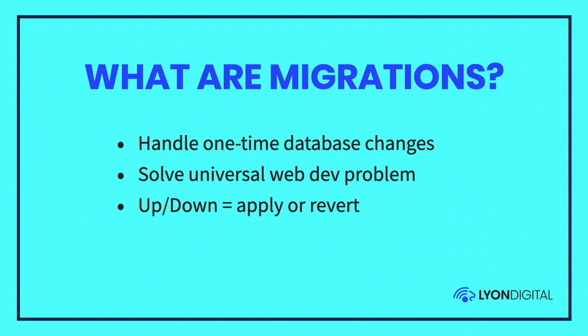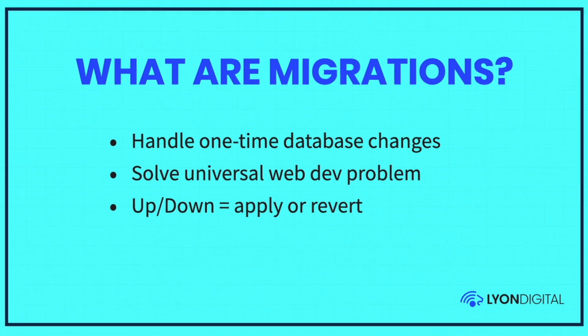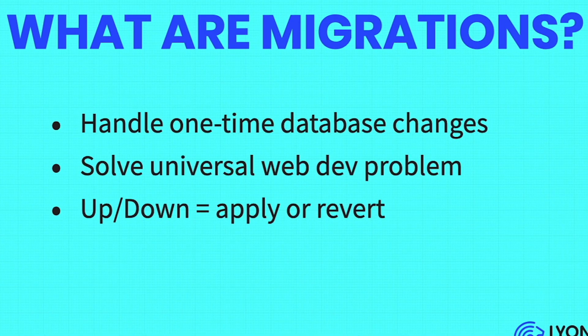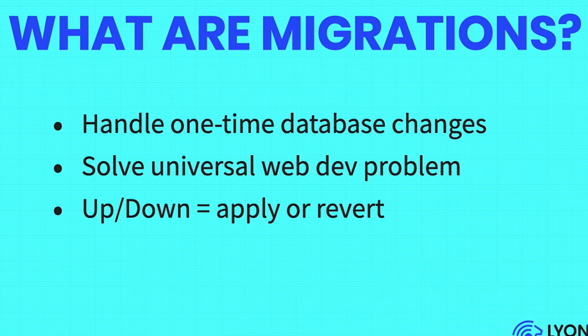Migrations handle one-time database changes — they're kind of one-off things. This is a universal problem in web development: you need to change the schema of a database that's already in production. You need to add a field, remove a field, alter a field, add a new table. All the major frameworks handle this. We're talking about the Craft-specific implementation. When you hear someone say migrations up or down, up means you're going to apply it, and down means you're going to revert it.